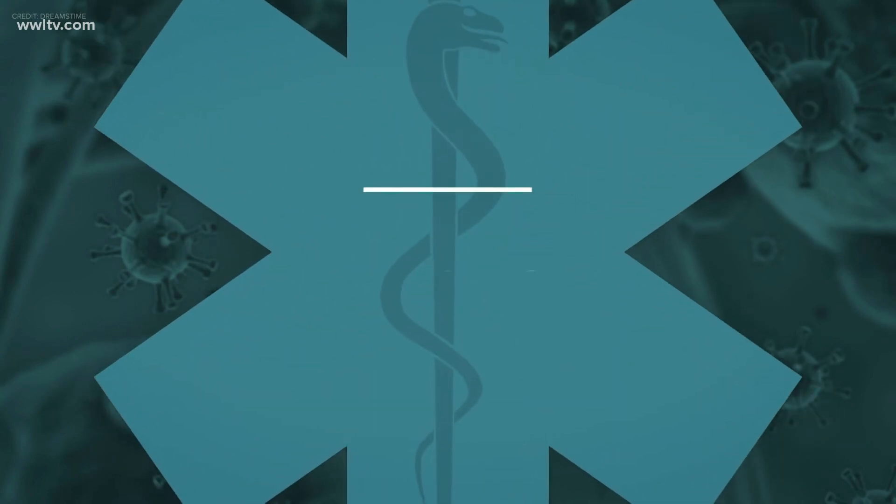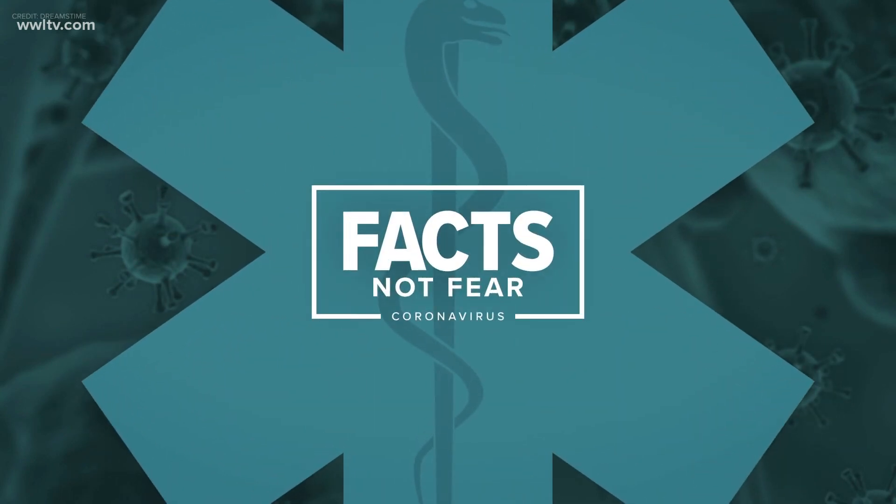We try to share facts, not fear, during this coronavirus pandemic. We'd like to break down some terms you've heard from the medical experts. You may hear experts refer to something called the R-naught number. Well, that number can gauge how contagious a virus is and how fast the cases are spreading.